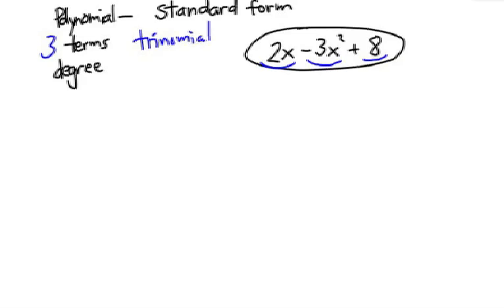I'm going to put this in standard form, which means I have to look at the exponents of the variable parts and put it in order, the highest exponent first. So if I put this polynomial in standard form, the negative 3x squared would come first.